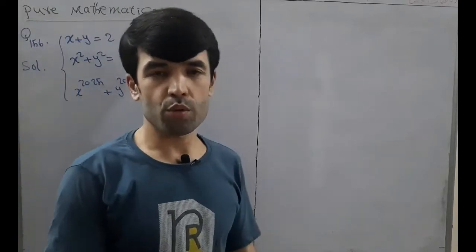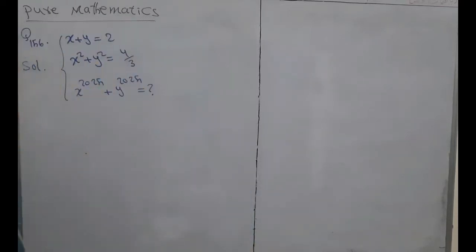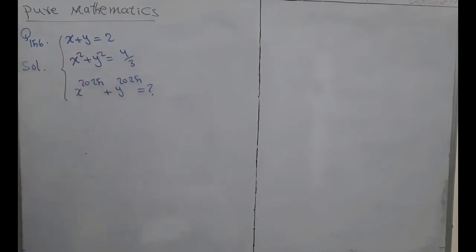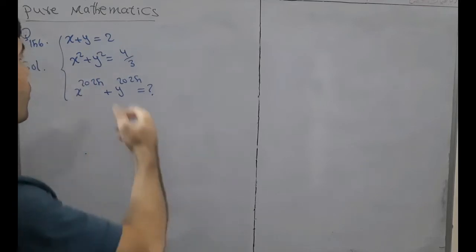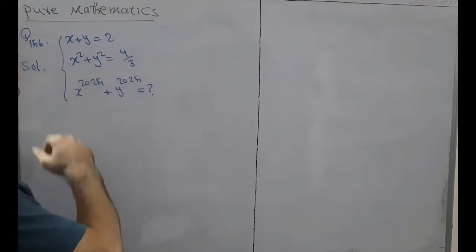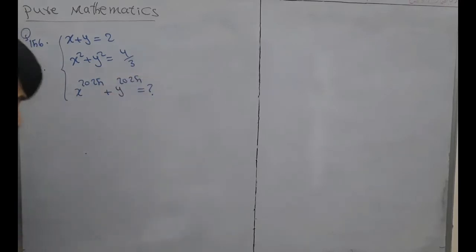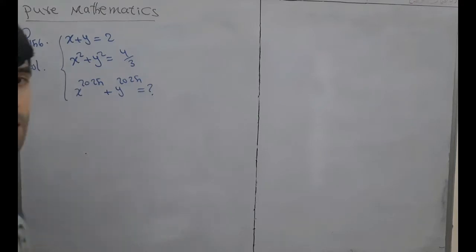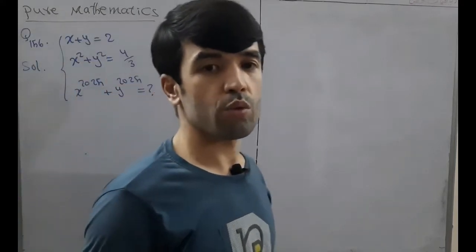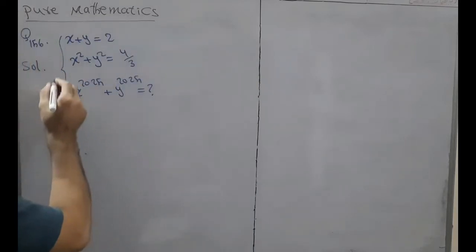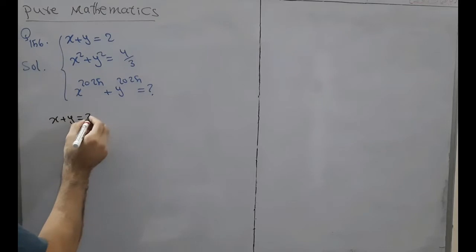Hello dear students, welcome to the Pure Mathematics channel. It is solution of challenging math question class, question 156. Here we have x plus y is equal to 2, x squared plus y squared is equal to 4 over 3, then we have to find the value of x to the power 2025 plus y to the power 2025. Please thumbs up, subscribe our channel and share with your friends. Now we want to solve this question. We have x plus y is equal to 2.